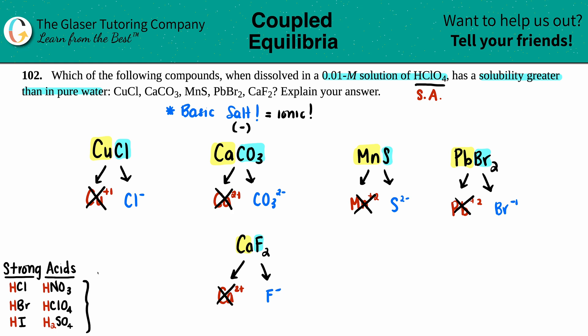Let's see. Cl-. Do I see a Cl in here? Yes I do, here it is. So this conjugate base is not going to be basic, it's going to be neutral. So CuCl does not have a greater solubility.